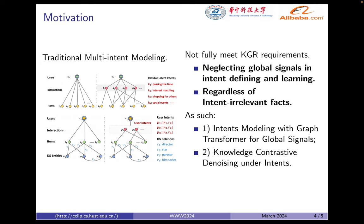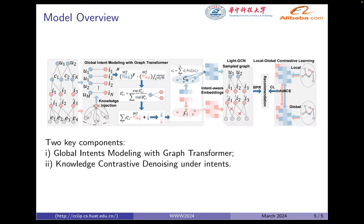We hence propose to perform intent modeling with a graph transformer for capturing global signals, and propose a knowledge contrastive design to disentangle user intents. Here is our model overview. The model consists of two key components: first, global intent modeling with a graph transformer; and second, knowledge contrastive learning to disentangle user intents.